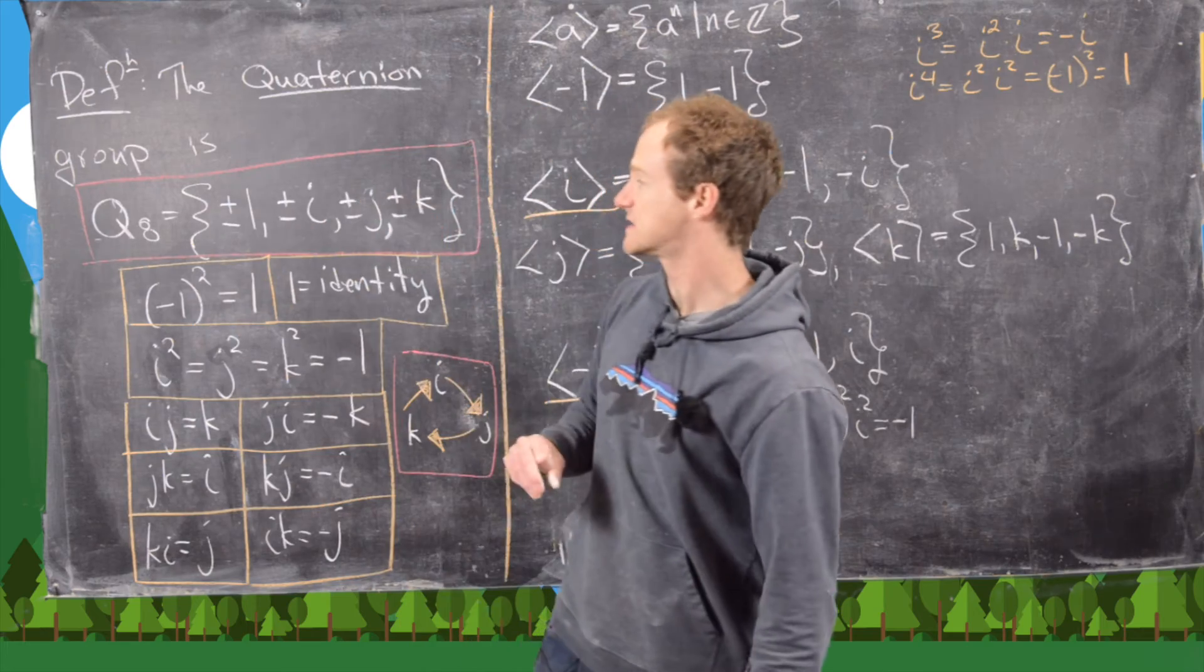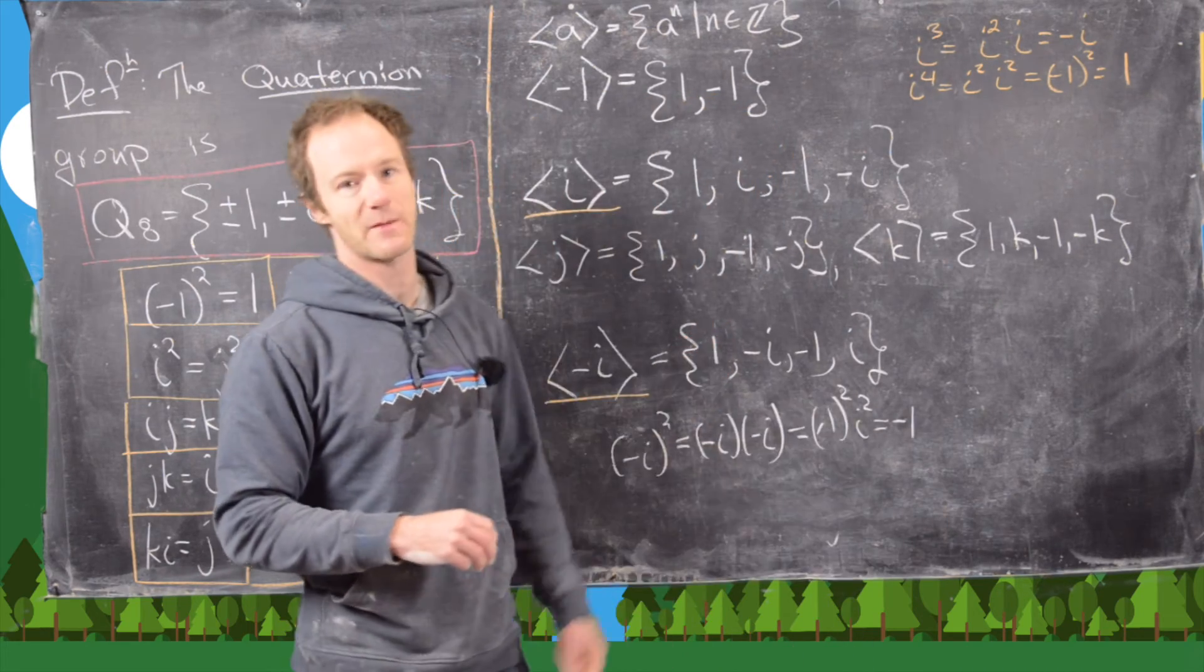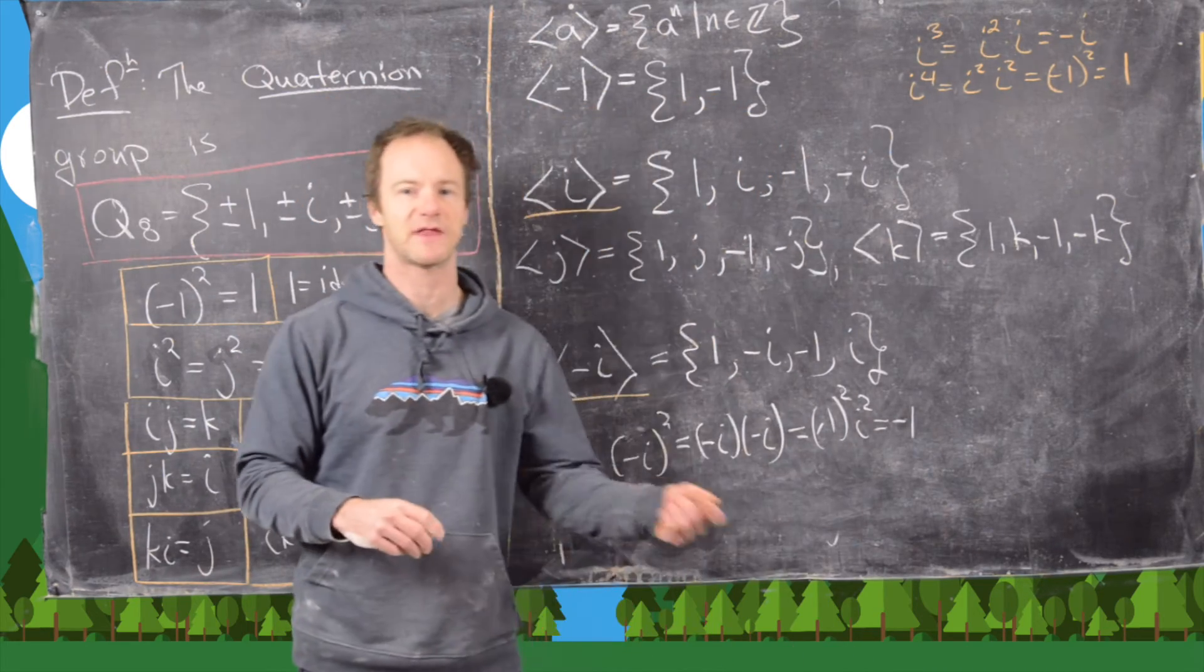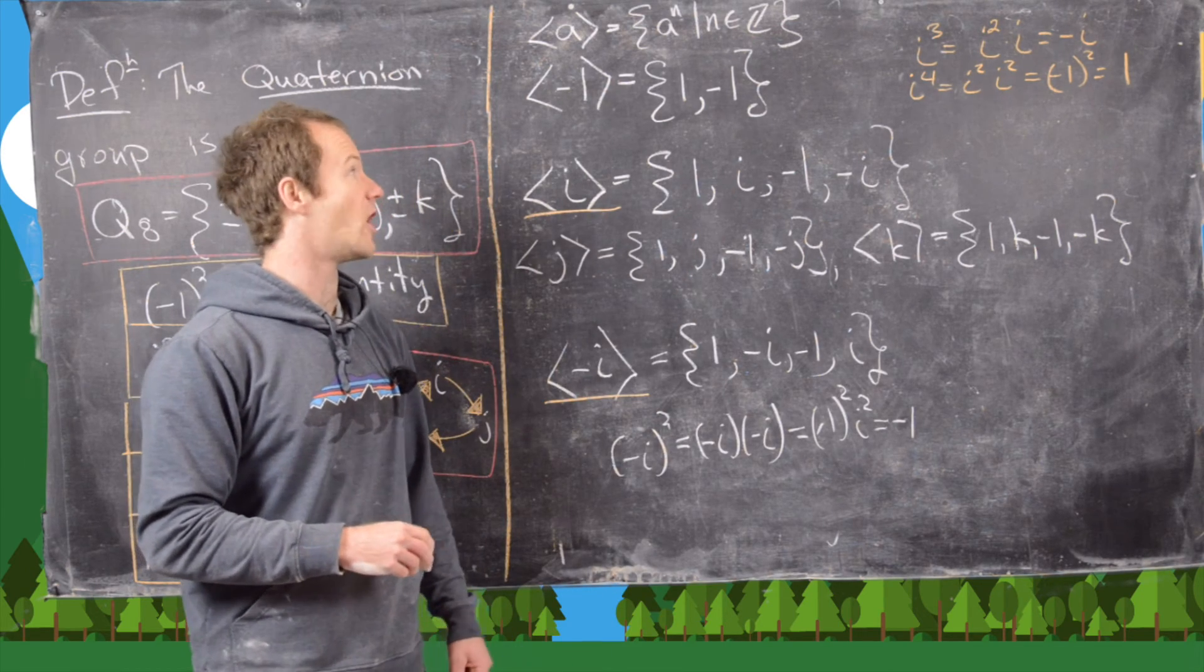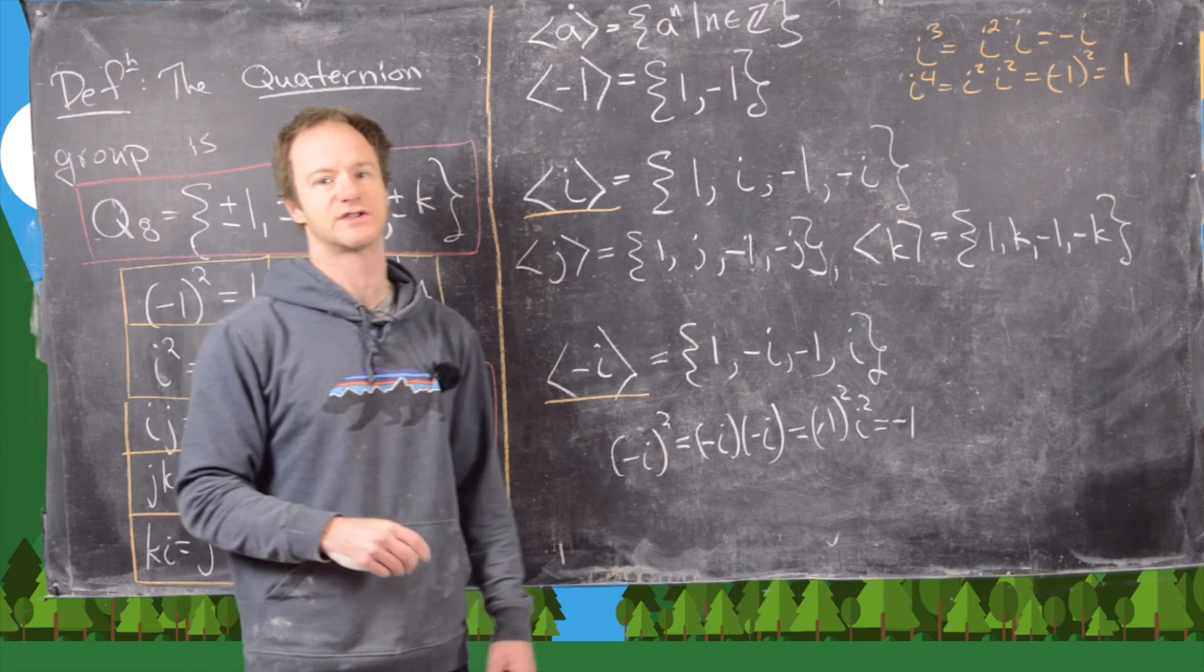Okay, and so that means we have exhausted all cyclic subgroups, except for maybe the one generated by the identity, but that is super boring. Okay, so I'm going to clean up the board, and then we're going to make a picture of all of the cyclic subgroups of the quaternion group.